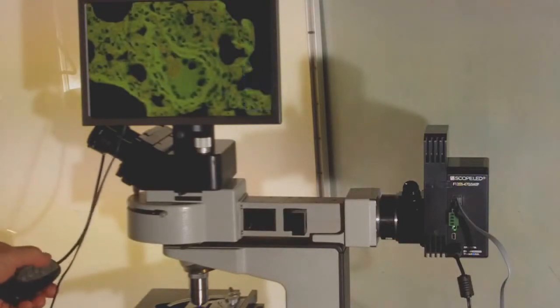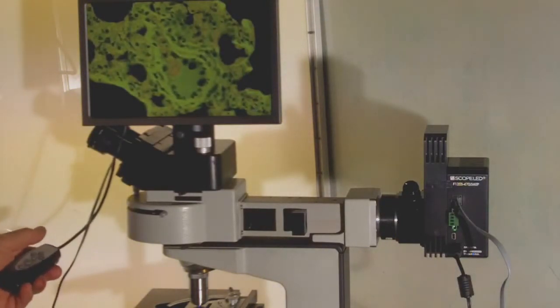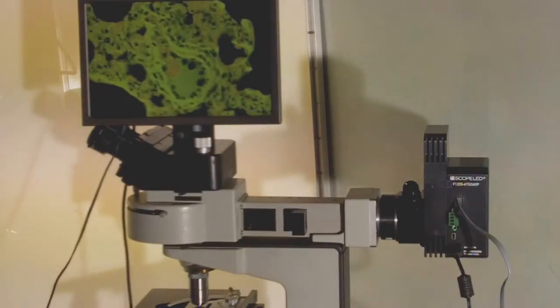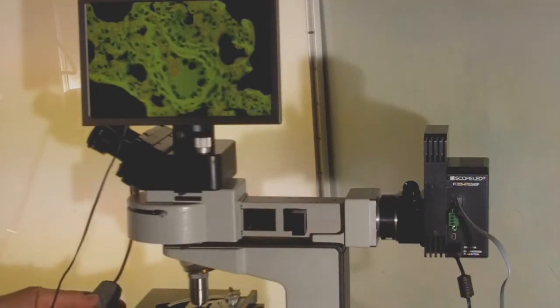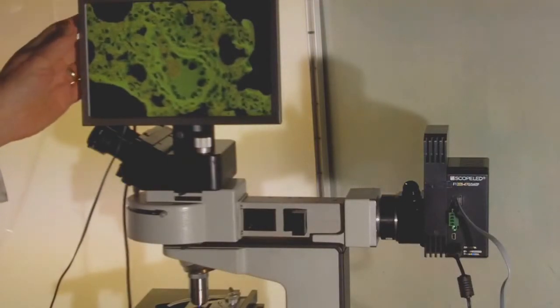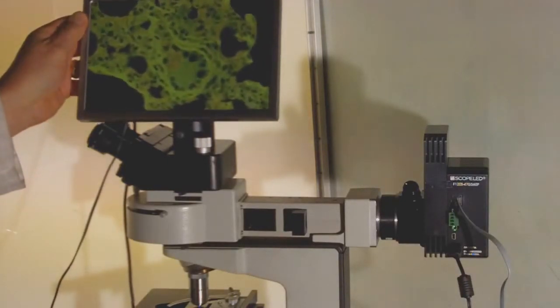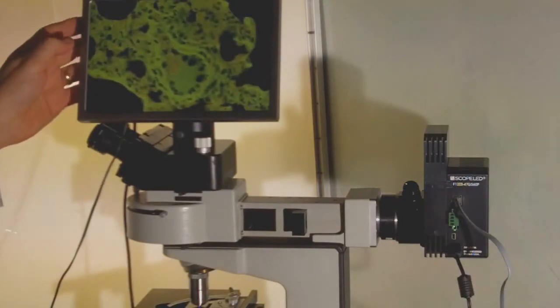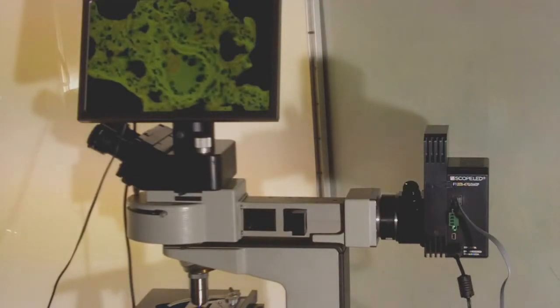It does a really nice job even with dry objectives. This is a fairly run-of-the-mill S-CMOS sensor in this camera, so there's no Peltier cooling going on here. Having the TIF screen makes it nice because we can tilt it at different angles depending on the room light. It's best that you keep the room lights dim when doing any type of fluorescence microscopy.